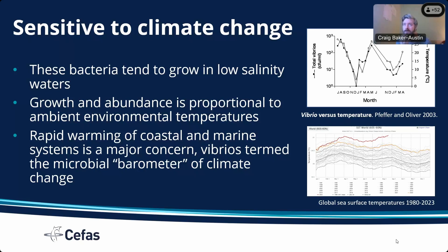It shows the relative abundance of total Vibrios in the water column compared to ambient temperatures. You can see during the summer they proliferate very rapidly, then die off in the autumn, and when water temperatures increase again they rapidly increase again. That's the seasonal cycle that we see with pathogenic Vibrios.